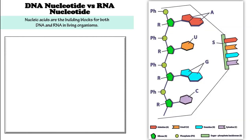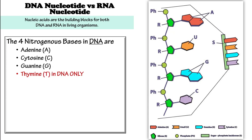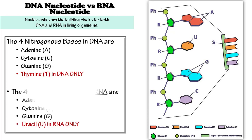If we compare the structure of the DNA nucleotides versus RNA nucleotides side by side, we see that the difference besides the sugar molecule is the nitrogenous bases. In DNA, we can have the option of having thymine as a nitrogenous base. In RNA, thymine is replaced with uracil.